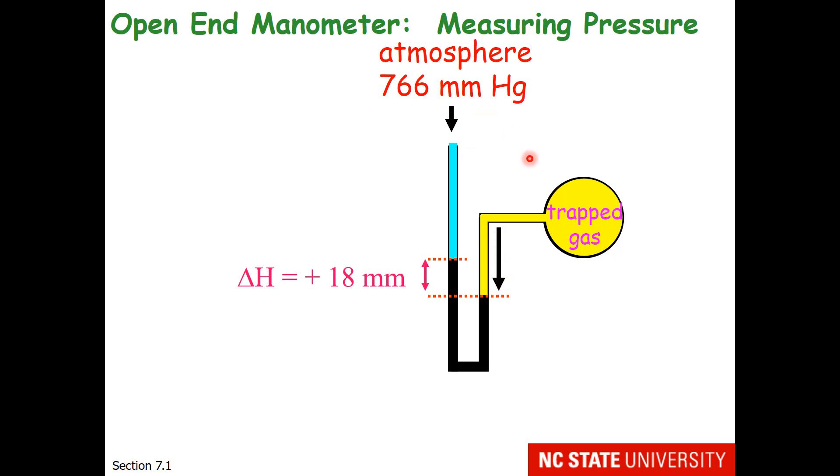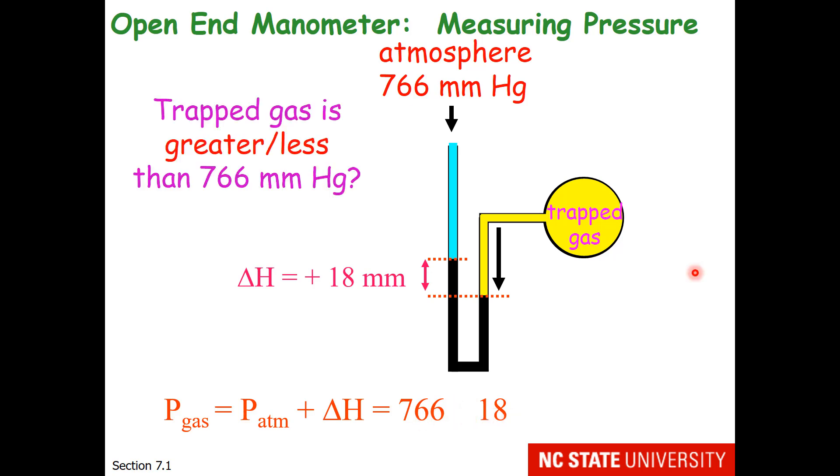Which one of these two is at a higher pressure? Should I take 766 and subtract 18, or should I add 18? To decide whether to use plus or minus, one needs to decide if the trapped gas is greater or less than 766 mm of mercury. I hope you decide that it must be greater, because the trapped gas is pushing down harder than the atmosphere.